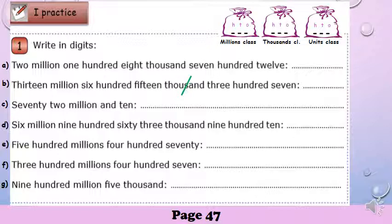Let's see what is the largest number. The largest word is million. So we have how many classes here? Three classes: million, thousands, and units.